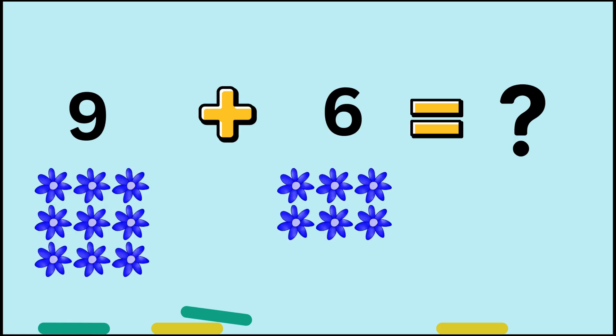Next one. Snowflakes. I mean, flowers. Nice pretty blue ones. Oh, anyway. 9 plus 6. Hmm. So, then 9 is the bigger number. 10, 11, 12, 13, 14, 15. 9 plus 6 is 15. Awesome sauce.